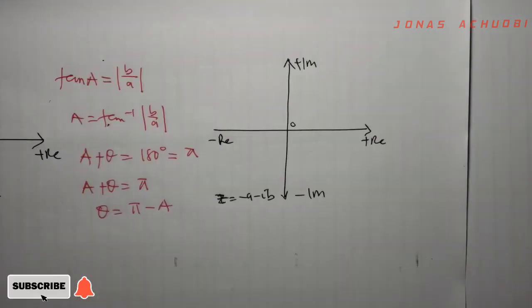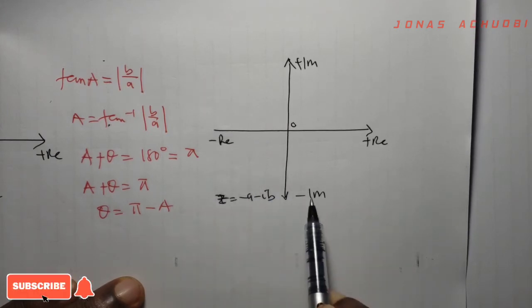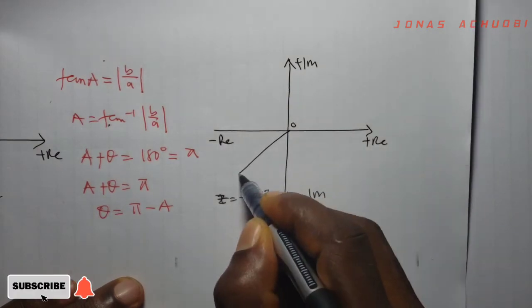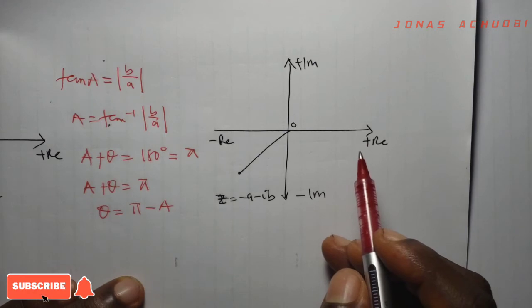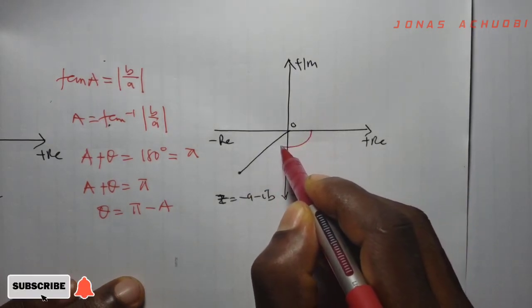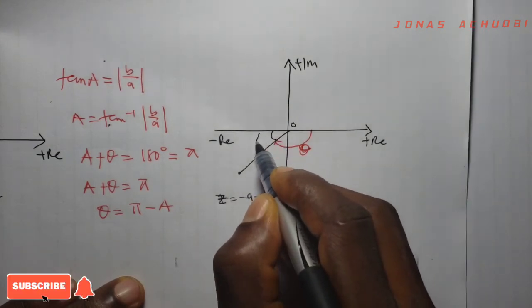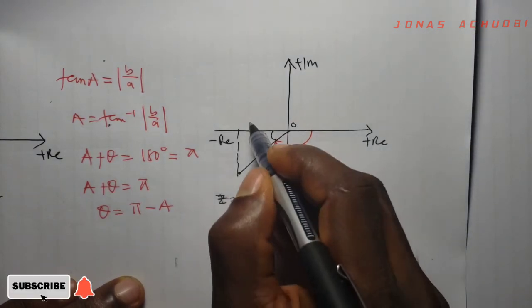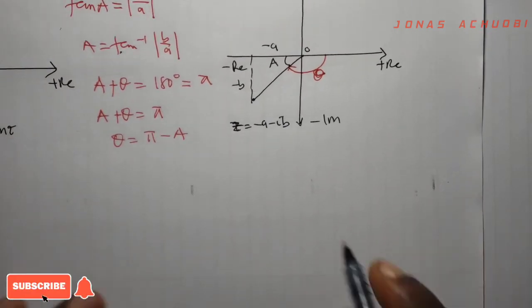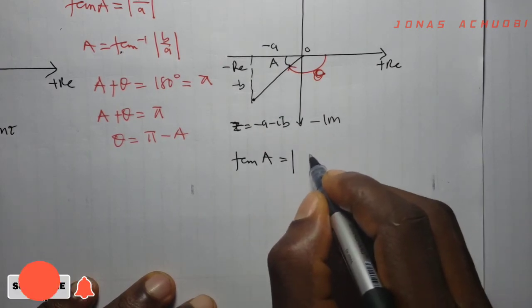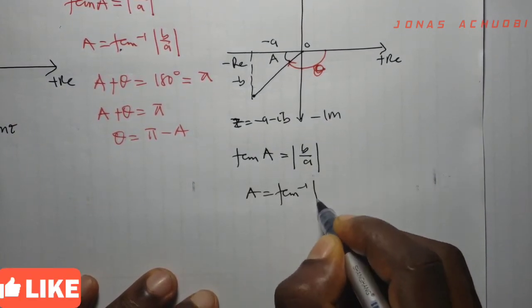In the third quadrant, the complex number has a negative real part as well as a negative imaginary part. The argument theta is the angle the complex number makes with the positive real axis, but in the third quadrant it is traversed in the clockwise direction. To get theta, we first find the acute angle alpha. The tangent of alpha equals the absolute value of b over a, so alpha equals the tan inverse of b over a.